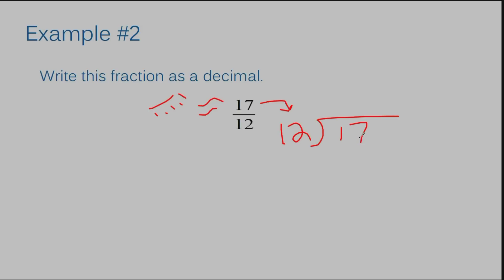How many times does twelve go into seventeen? In this case we're dealing with an improper fraction, so the number on the inside happens to be larger, so we don't have to add a decimal zero right at the beginning. Twelve goes into seventeen one time — that's twelve — so I subtract and get five. Now I do need to add a decimal zero so I can have something to bring down, and I must also add a decimal point up above. As soon as you write a decimal down, your decimal always comes up above.